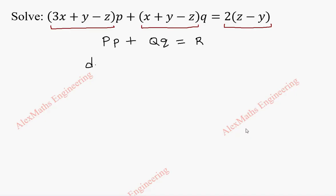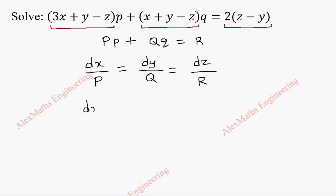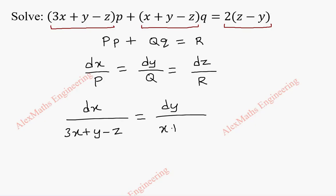To get the solution, we have to solve dx by capital P equal to dy by capital Q equal to dz by capital R. Now, substituting P, Q, R: dx by 3x plus y minus z equal to dy by x plus y minus z equal to dz by 2z minus 2y, where we multiply 2 inside.